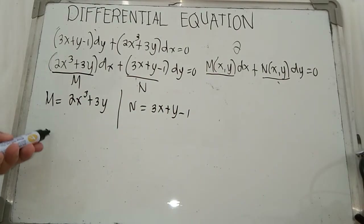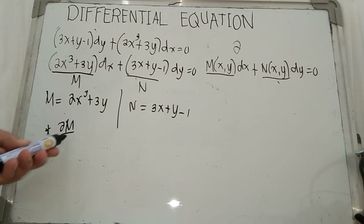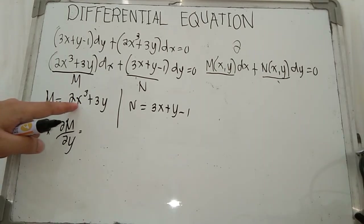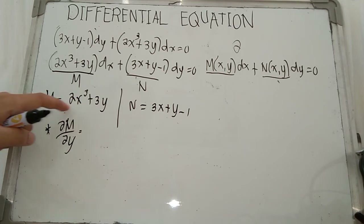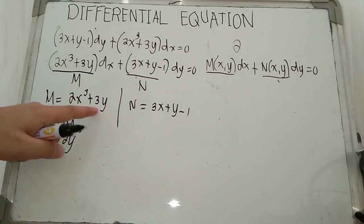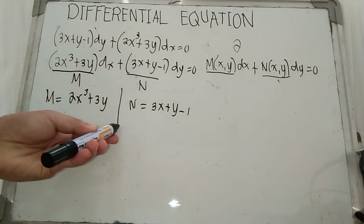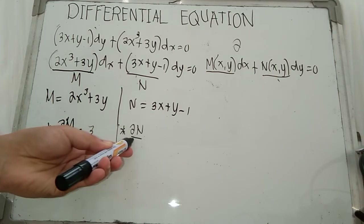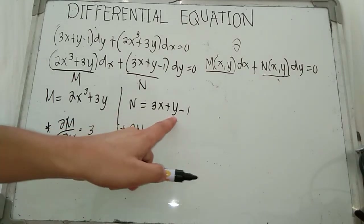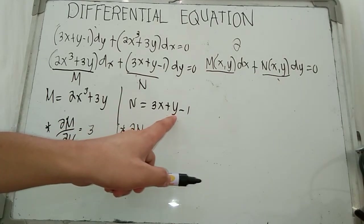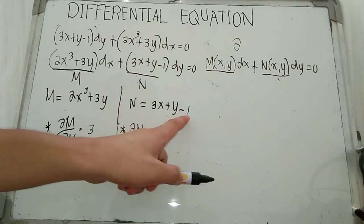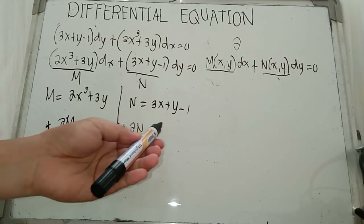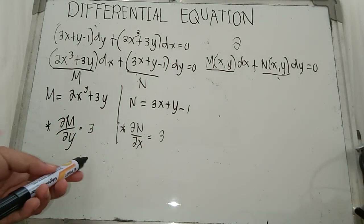We get the partial derivative of M with respect to y, treating x as a constant. So 2x cubed is constant and its derivative is 0. The derivative of 3y is 3. Then, getting the partial derivative of N with respect to x, treating y as a constant: the derivative of 3x is 3, and the remaining terms y minus 1 are constants whose derivatives are 0.